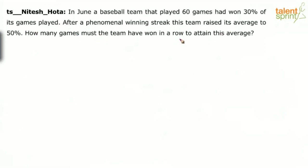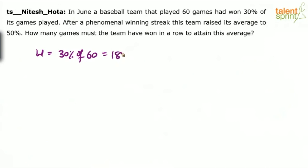So how do you do this? Initially, it said total games played was 60 and it had won 30% of its games played. So the number of games which they had won was 30% of 60, which comes out to be 18. They had won 18 games.